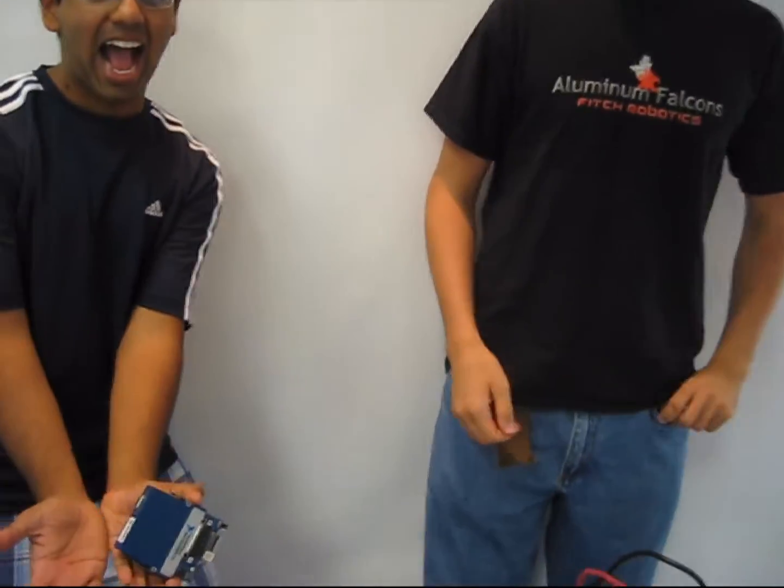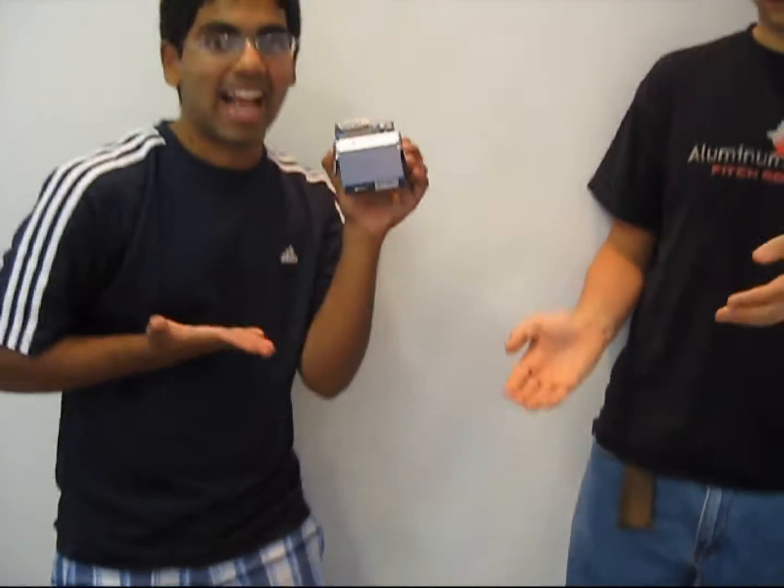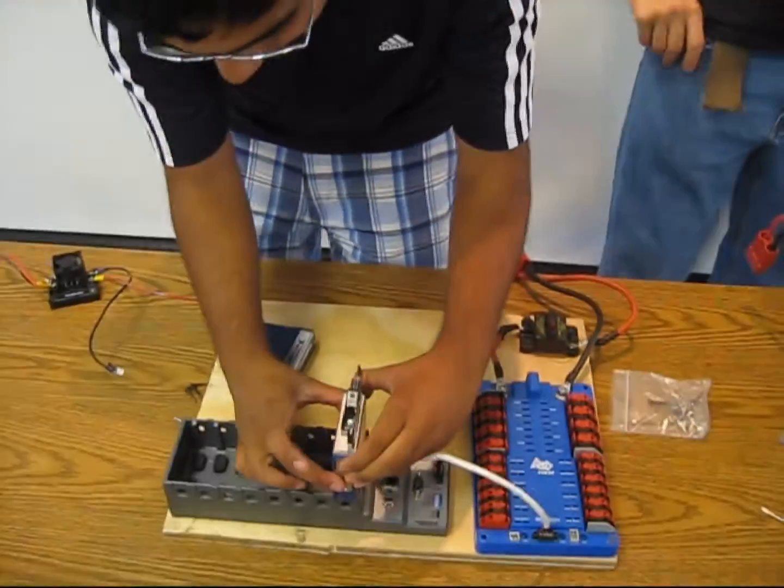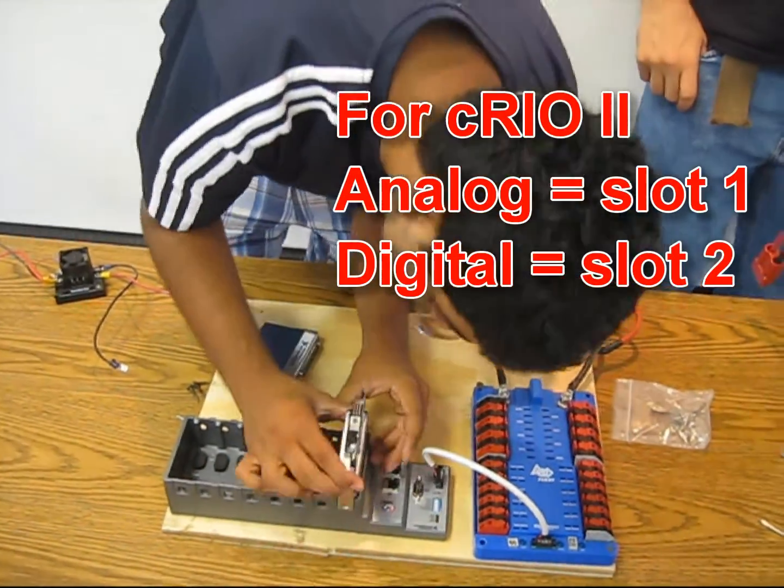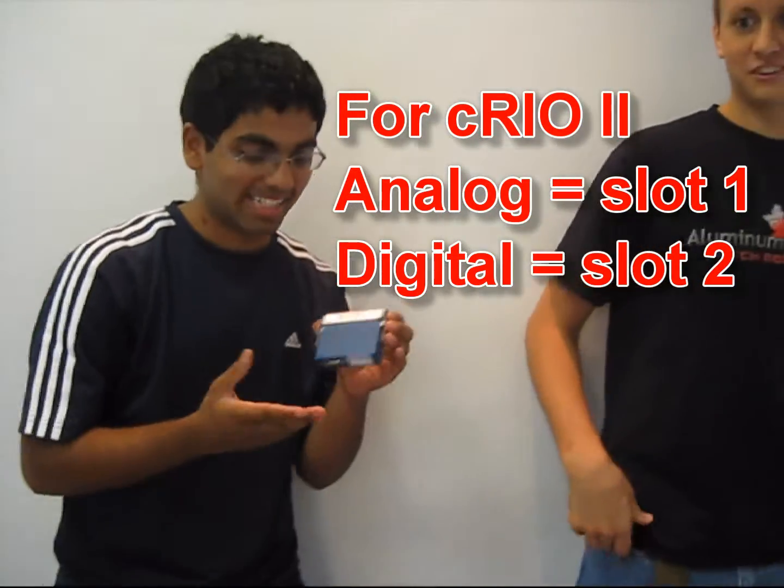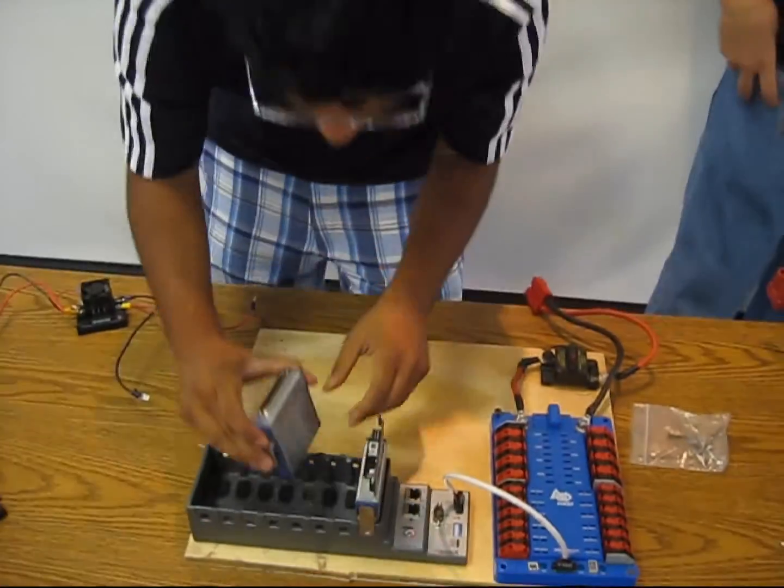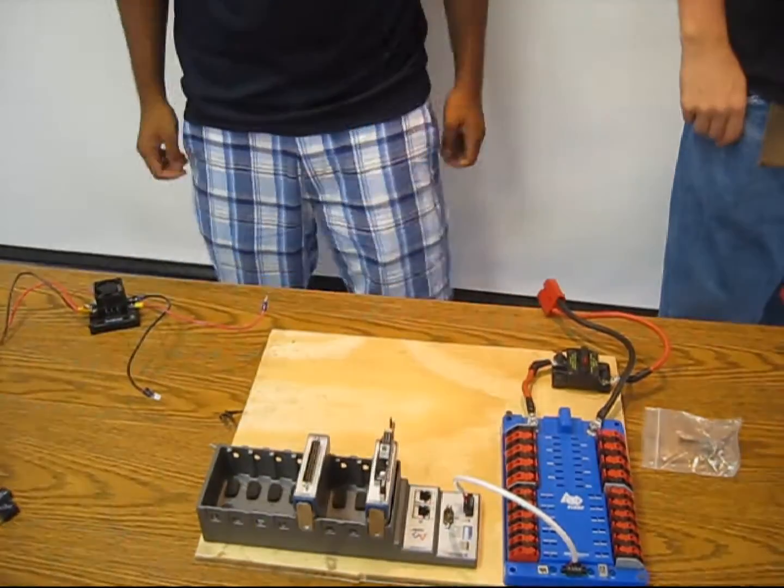Now that you have connected your C-Rio to your power distribution board, you must first install your analog card into slot 1 of the C-Rio and install your digital I-O card into slot 4 of the C-Rio. Now you're ready to pwn noobs.